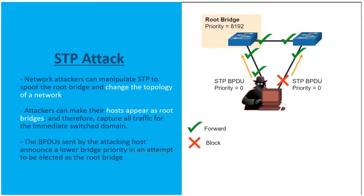Spanning Tree is a protocol that is on by default on our Cisco switches. Its job is to provide us redundant connections while maintaining loop-free pathways. But the problem is threat actors can utilize Spanning Tree to actually change the topology of your network infrastructure. They do this by making their host appear as a root bridge — based off logical, not physical connections.